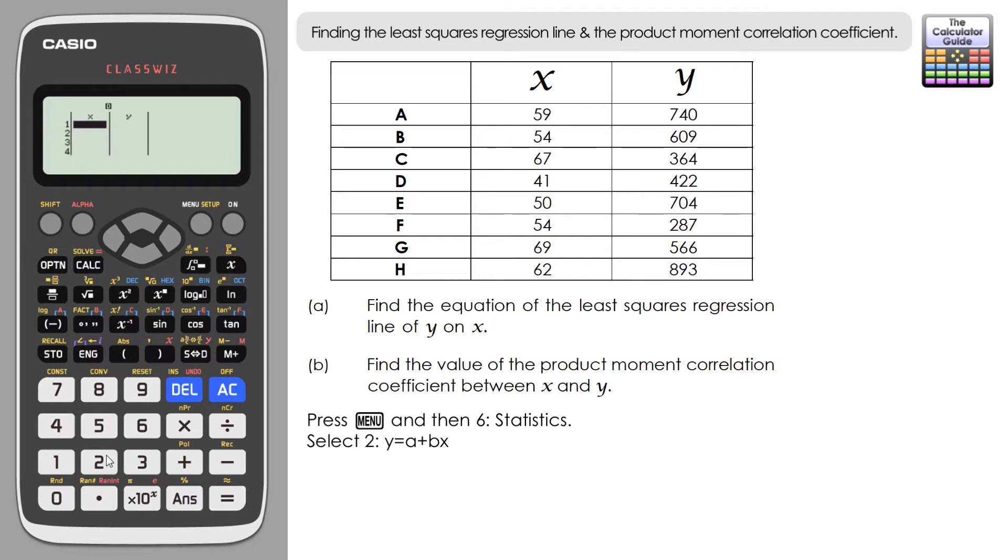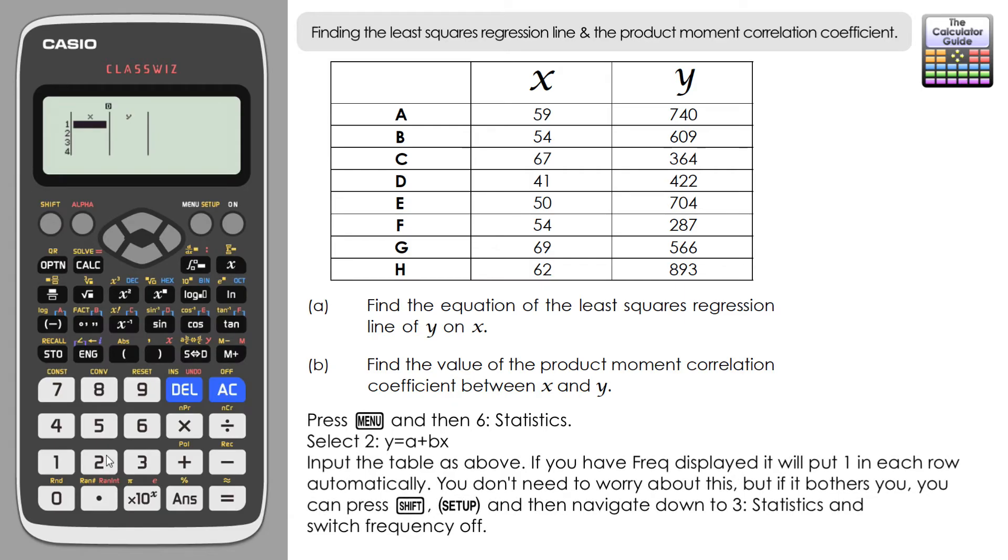And you can see that we've got our input here for X and Y. Now you can go ahead and start inputting that. I just want to comment on if you have a frequency column here on the right hand side, you've got two options really. You can either choose to ignore it; it'll automatically fill in a one each time just to represent that we've got one of each variable A to H here and that will be fine.